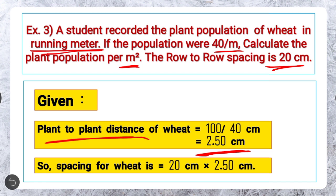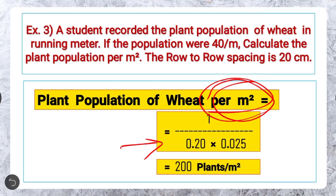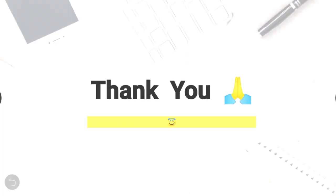Row to row spacing is already given in the example — that is 20 centimeter. So spacing for wheat is 20 cm × 2.5 cm. We have been asked for plant population per meter square, so the formula will be: plant population of wheat per meter square equals 1 divided by 0.20 × 0.025, considering only 1 meter square and spacing converted into meter. Multiplying the denominator, we get 1 divided by 0.005, that is the answer will be 200. So the final answer is plant population of wheat per meter square is 200 plants.